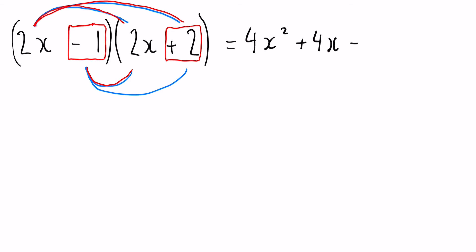Finally, we have the two red boxes multiplied together, so this final claw here: minus one times a positive two. Again, a negative and a positive gives us a negative, and one times two gives us two.